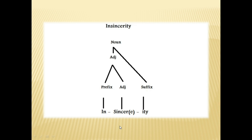We label each combination. So 'in', which is a prefix, when added to 'sincere', which is an adjective, gives us an adjective, which is 'insincere'. And if we add the suffix '-ity' to this adjective 'insincere', it gives us the word 'insincerity', which is of course a noun. So we divided the word into prefix, adjective, and suffix. When we combine the prefix with the adjective 'sincere', it gives us another adjective, 'insincere'. Then when we combine the '-ity' suffix with the adjective 'insincere', it gives us 'insincerity', which is a noun. That's why we labeled it as a noun here.